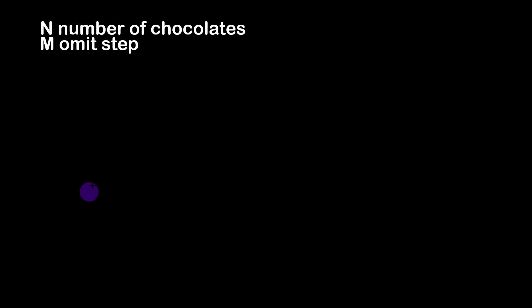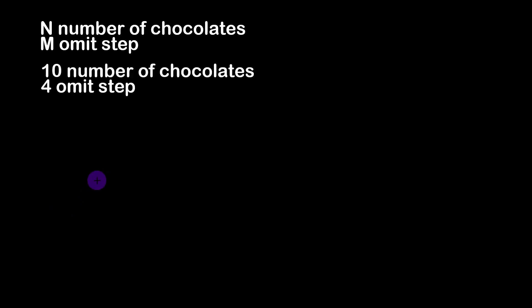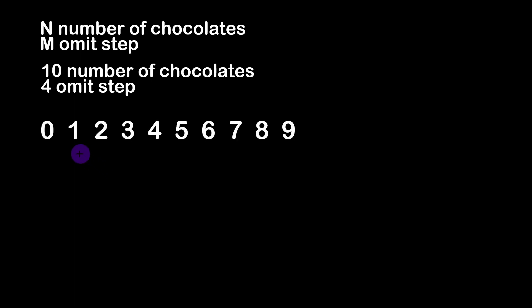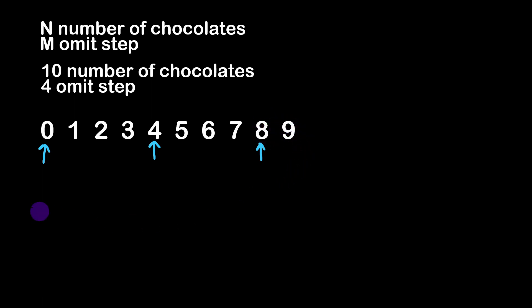For example, if we are given numbers 10 and 4, we know we have a box of 10 chocolates. Imagine these are arranged in a circle. We start by eating the chocolate at index 0, then we jump four chocolates forward so we eat the chocolate at index 4, then four more and we eat chocolate at index 8. When we reach the end of the array, remember this is a circular array, so we go back to the beginning meaning the first element.